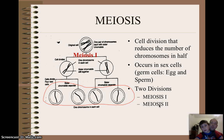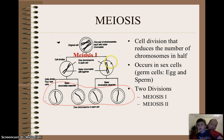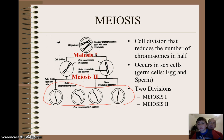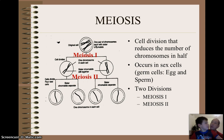And those are called Roman numerals — this is Roman numeral one, and then here we have meiosis II. So next, why don't we find out a little bit about all the different stages of meiosis.